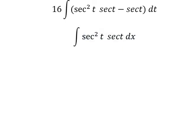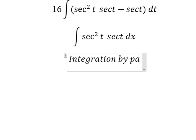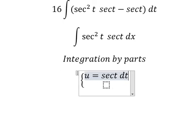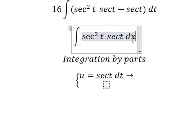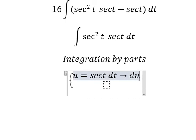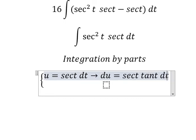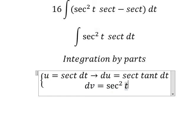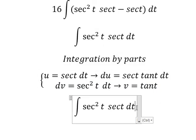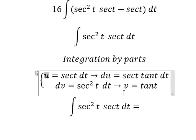Now I will concentrate on this part and use integration by parts. I set u equal to sec(t). The first derivative gives du equal to sec(t) tan(t) dt. For dv, we have sec²(t) dt, and integrating that gives v equal to tan(t). So we apply u times v.